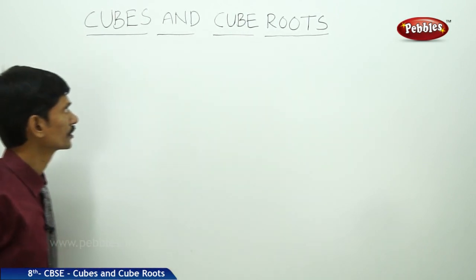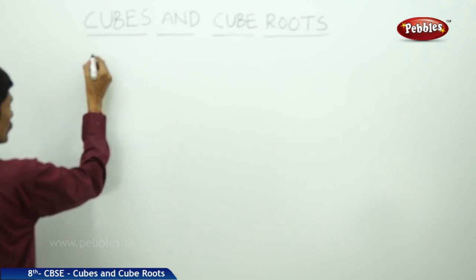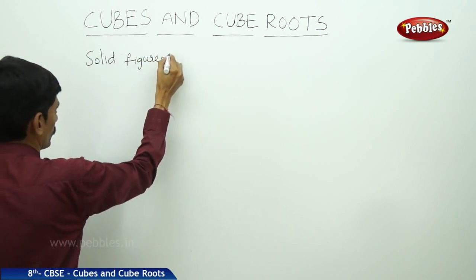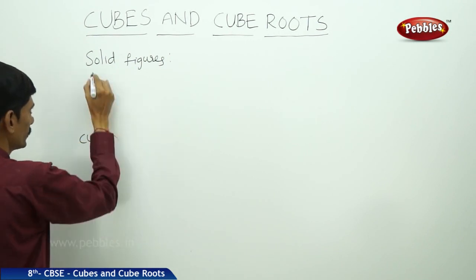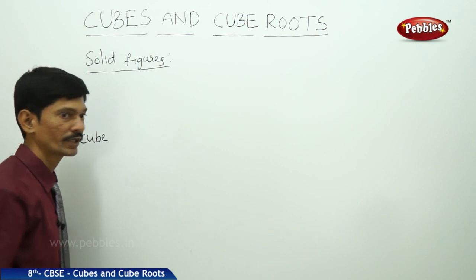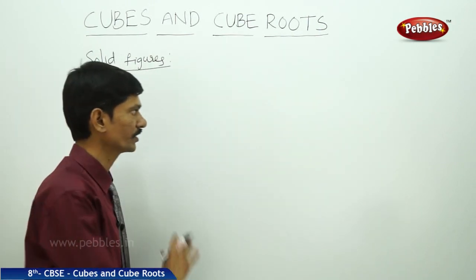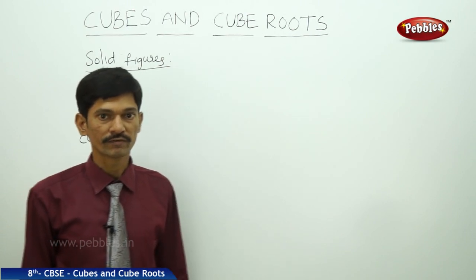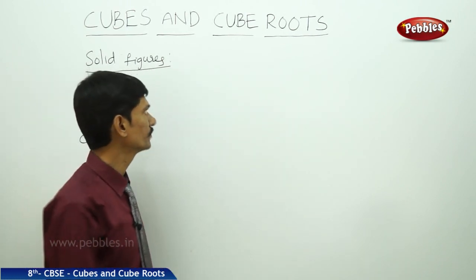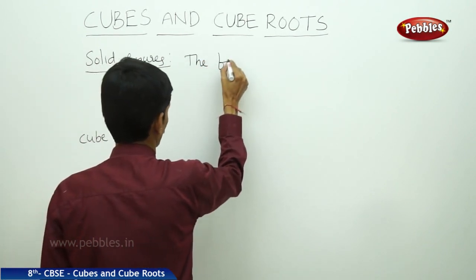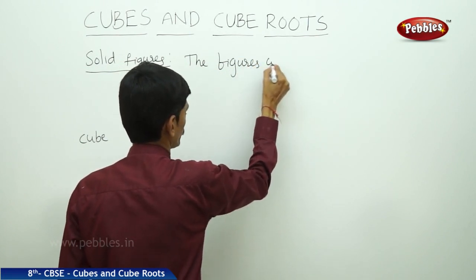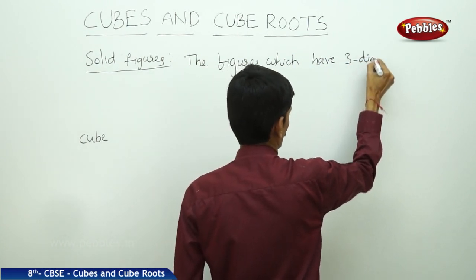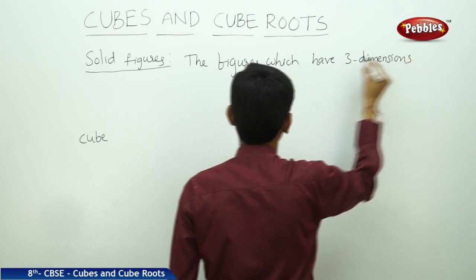Now before going to the actual topic of cubes and cube roots, let us discuss two topics: solid figures and cube. A plane figure is one which has only two dimensions, like a rectangle, square, or circle. Whereas if a figure has three dimensions, it is known as a solid figure.